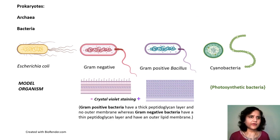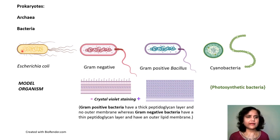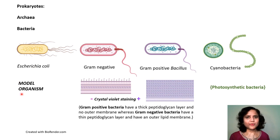Prokaryotes don't have a nucleus. They have genetic material in a nucleoid attached to the cell membrane, and they include archaea and various kinds of bacteria. One of them is E. coli, which is a very popular model organism in cell biology and molecular biology research.